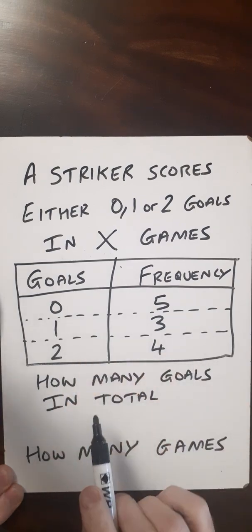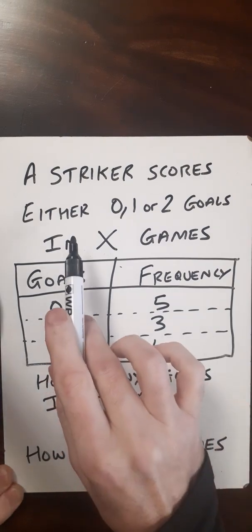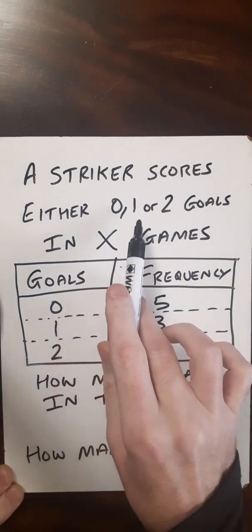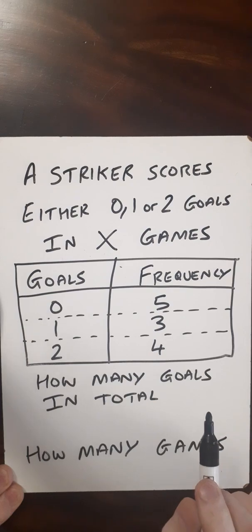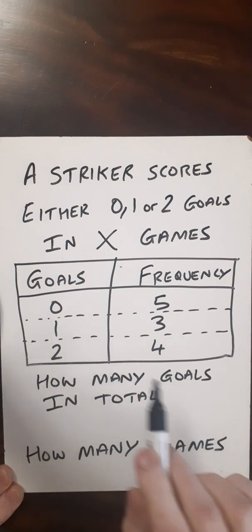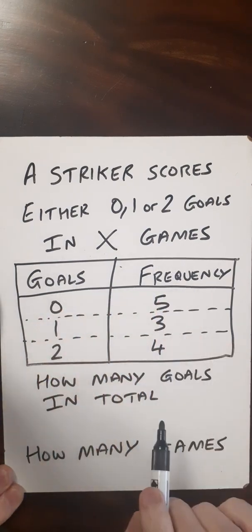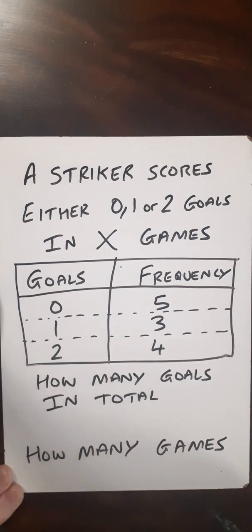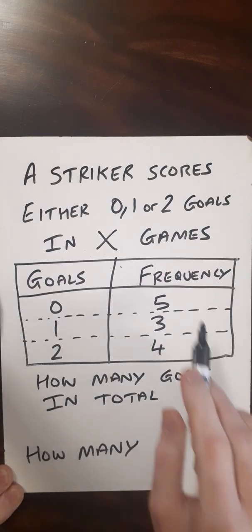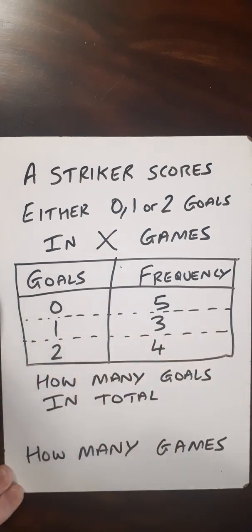Here we've got some information about a striker. They score either 0, 1 or 2 goals in a game, and we want to know how many games they did play and also how many goals they scored in total. We're given this information.